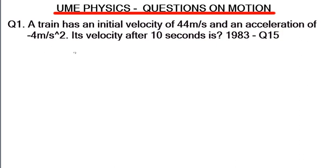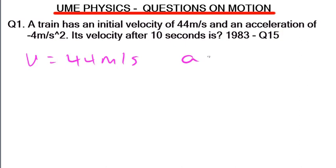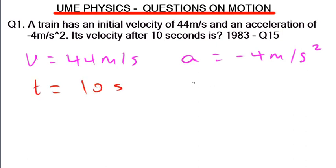The first question says: a train with an initial velocity of 44 m/s and an acceleration of -4 m/s² — its velocity after 10 seconds is. Note the question gave us our initial velocity u = 44 m/s, and an acceleration of -4 m/s², which is automatically a deceleration because it is negative. It also gave us our time as 10 seconds.